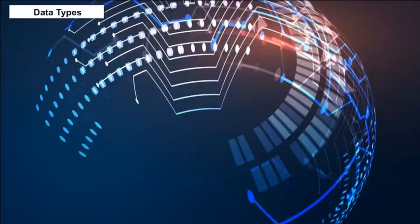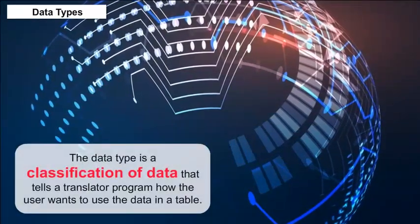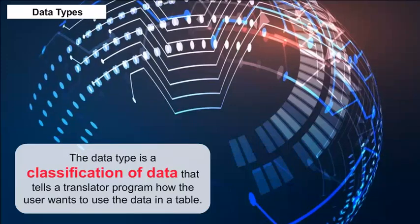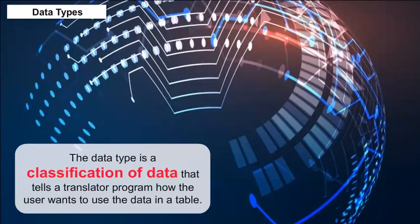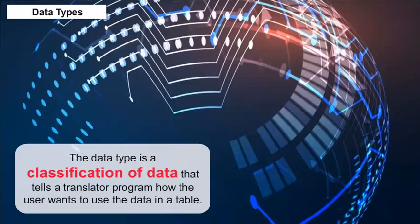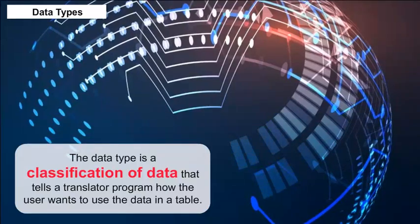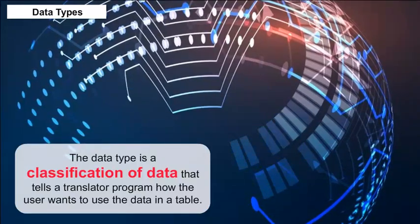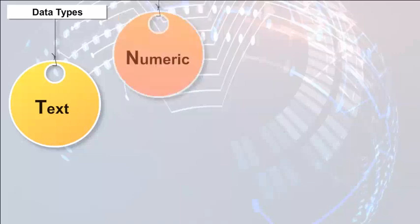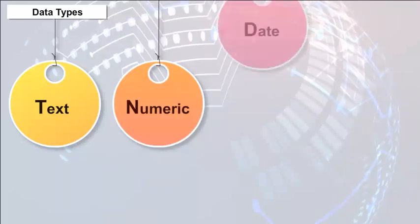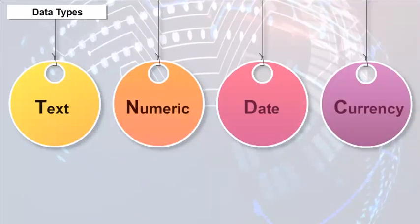Data Types — the data type is a classification of data that tells a translator program how the user wants to use the data in a table. It can be text, numeric, date, currency, etc.